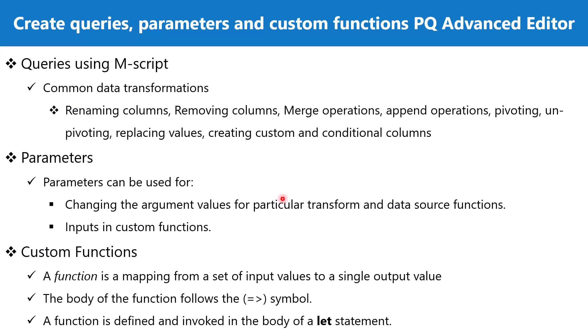We will build a short example using parameters and custom functions, then focus on the M code to see how parameters and custom functions show up within the M script. The focus is not on building these using the user interface but instead on looking at the M script. Let's go and do this example in Power BI — this example file has been provided in the supporting material as well.